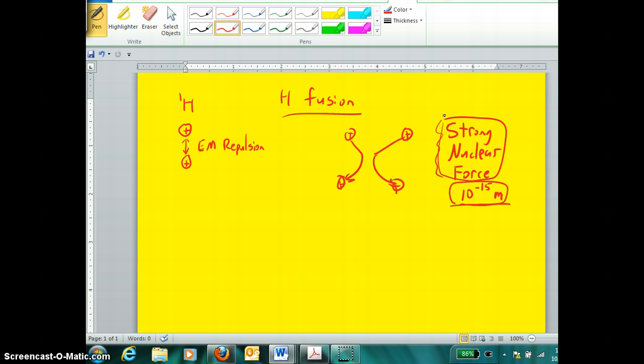If these protons approach each other, their repulsion is sufficient to prevent them ever getting this close together and preventing the strong nuclear force from binding them. So the question is, just how is it accomplished? It's accomplished by tremendous velocities.